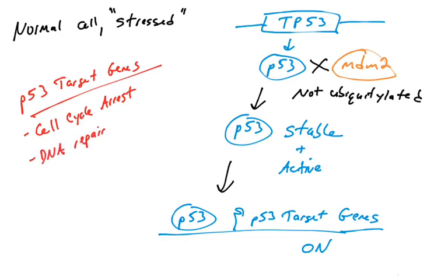It can also turn on genes that will repair the DNA. So if this stress is a DNA damage event, repair can take place. And if the damage is too great, then p53 can trigger apoptosis.